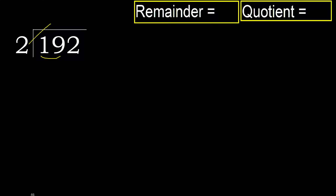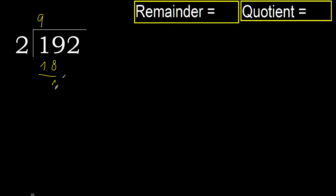2 multiplied by which number is nearest to 19 but not greater? 2 multiplied by 9 is 18, which is not greater. 19 minus 18 is 1. Next.